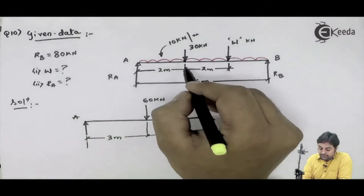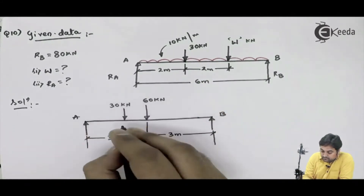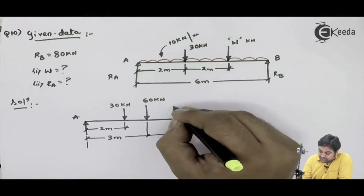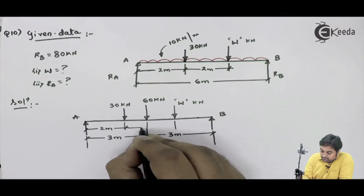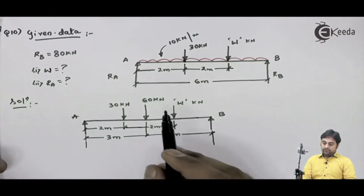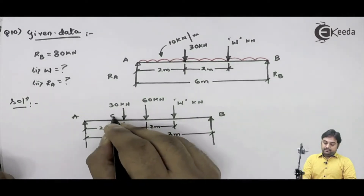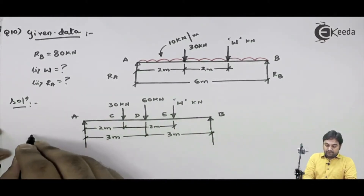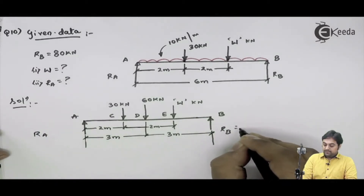Next, 30 kilonewton is at 2 meters distance from A, and w kilonewton is at 4 meters from point A. I have now converted the UDL into a point load and drawn the diagram again. I will mark the load positions as C, D, and E respectively. Here we have RA and RB, where RB is 80 kilonewton.